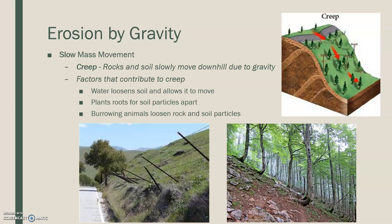The last topic is erosion by gravity. There are two main types: slow mass movement and rapid mass movement. Slow mass movement often comes in the form of a creep, where rocks and soil move down a hill because of gravity. Several factors lead to this: water loosens soil over time, burrowing animals loosen rocks, and plant roots get displaced. Everything moves down the hill very slowly — in real time. A J-shaped tree or a fence leaning sideways are good indicators that a creep is occurring. Slow mass movement does take a long time to occur.